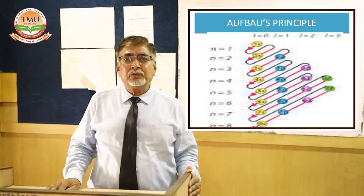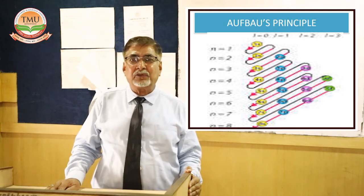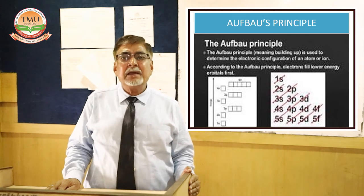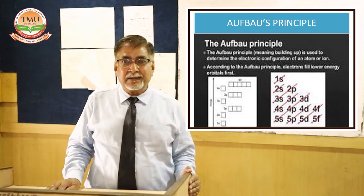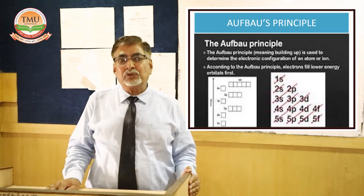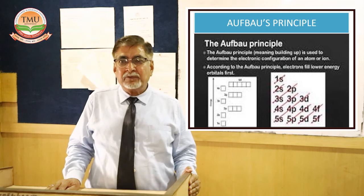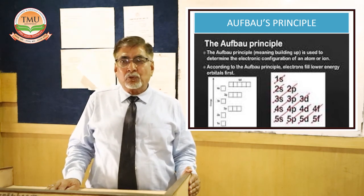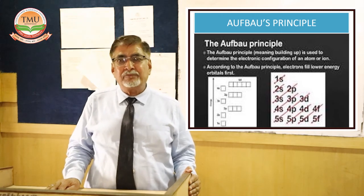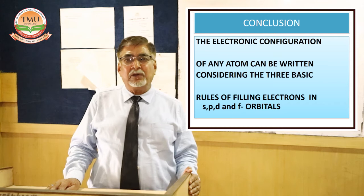Transition elements are those which have unpaired electrons. For scandium (21), the outermost orbitals are 4s² 3d¹ because the energy of 4s is less than 3d. Titanium (22) is 4s² 3d², vanadium (23) is 4s² 3d³, and chromium (24) is written as 3d⁵ 4s¹ per Hund's Rule. Continuing to copper (29), which would be 3d⁹ 4s², but because fully-filled orbitals are more stable, we write it as 3d¹⁰ 4s¹.